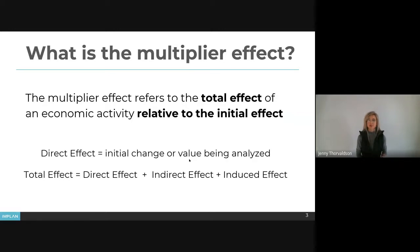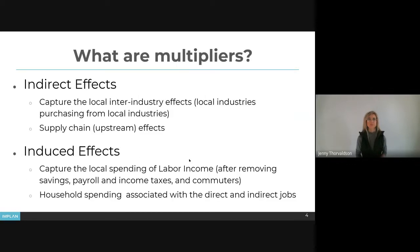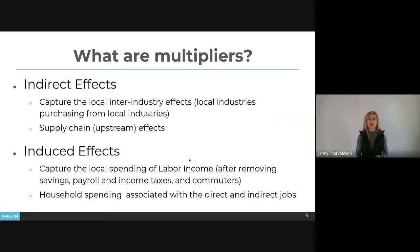The direct effect is the initial change or value being analyzed — that's the term we use in ImPlan. The total effect is the sum of the direct effect plus all the ripple effects, and there are two types of ripple effects: indirect and induced. Indirect effects capture the local inter-industry effects — basically local industries purchasing from other local industries, think of this as supply chain effects. Induced effects capture the local spending of labor income after removing savings, payroll income taxes, and commuting. This is household spending associated with employees in the directly and indirectly affected industries.